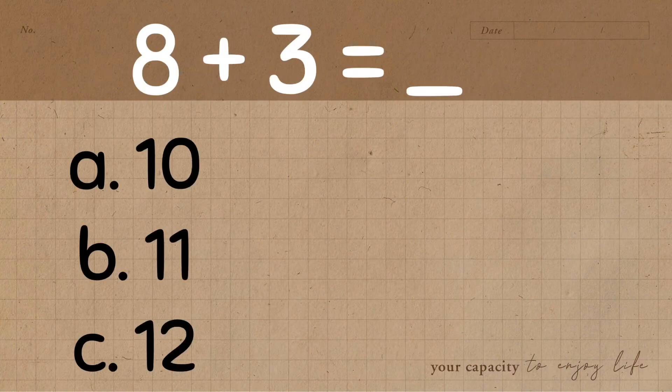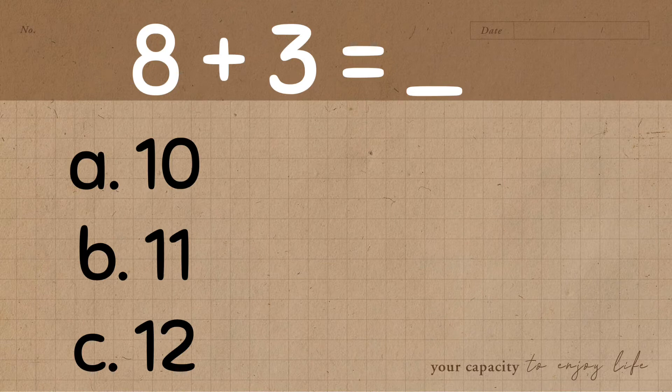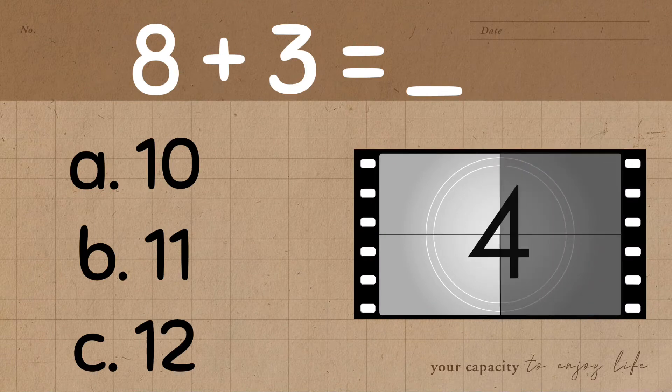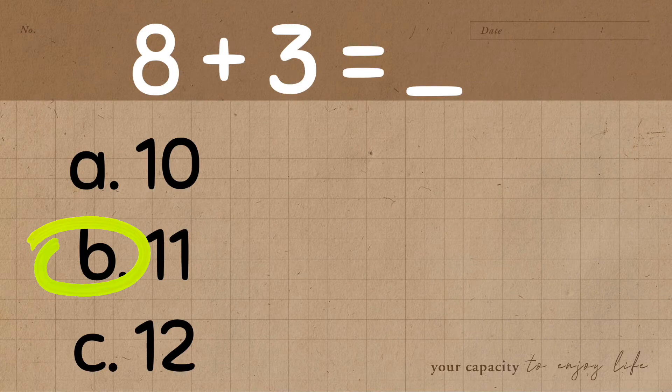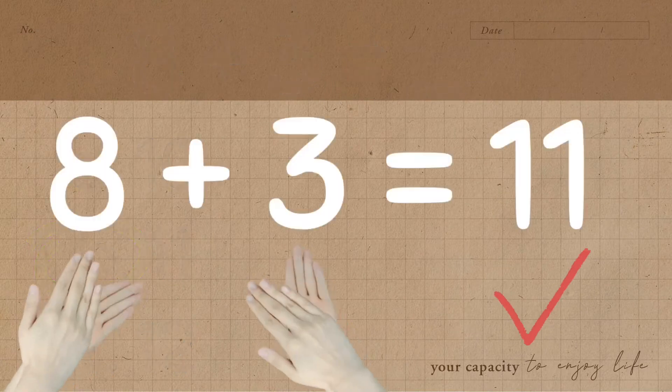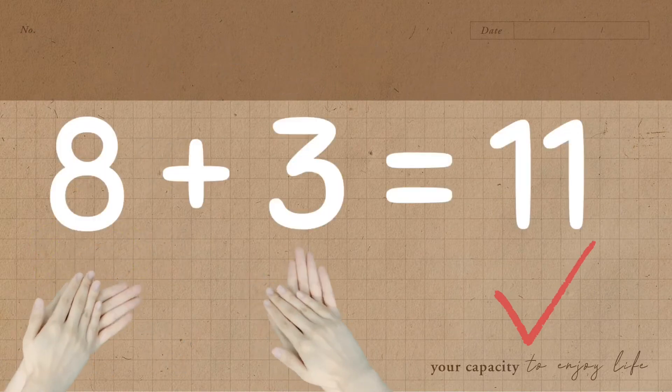8 plus 3 is equal to blank. Is it A, 10, B, 11, or C, 12? The correct answer is B. 8 plus 3 is equal to 11.